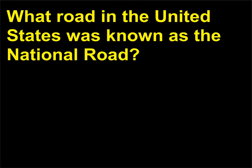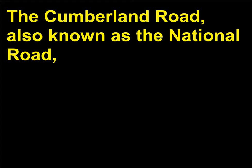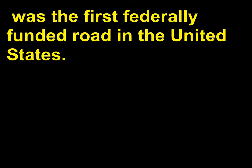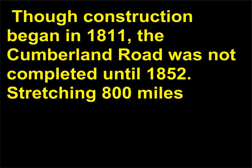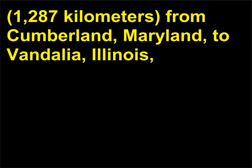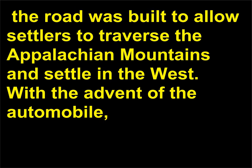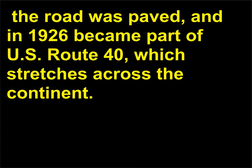What road in the United States was known as the National Road? The Cumberland Road, also known as the National Road, was the first federally funded road in the United States. Though construction began in 1811, the Cumberland Road was not completed until 1852, stretching 800 miles (1,287 kilometers) from Cumberland, Maryland, to Vandalia, Illinois. The road was built to allow settlers to traverse the Appalachian Mountains and settle in the west. With the advent of the automobile, the road was paved, and in 1926 became part of U.S. Route 40, which stretches across the continent.